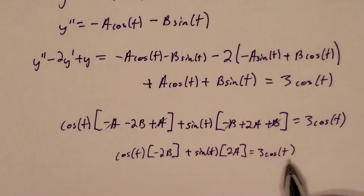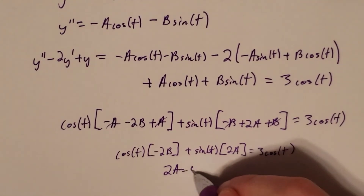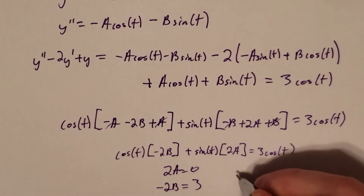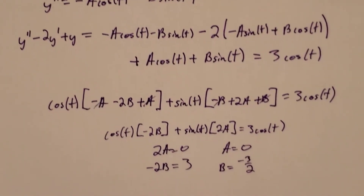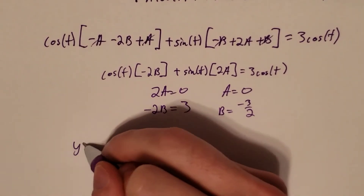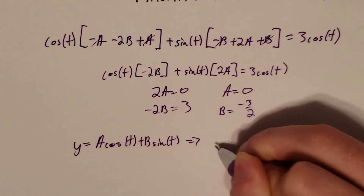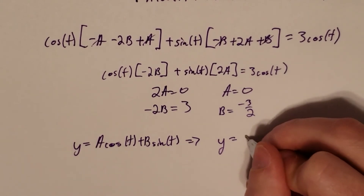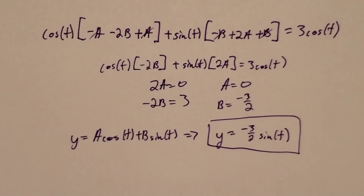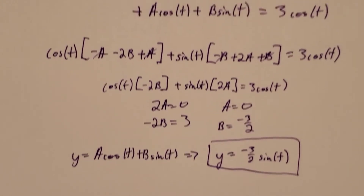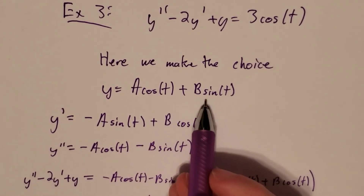The coefficient on the sine term on the right is 0, so 2a equals 0 and negative 2b equals 3. So we get a equals 0 and b equals negative 3/2. This means y equals a cosine of t plus b sine of t becomes y equal to negative 3/2 sine of t. And this is our particular solution. Notice that if we had only guessed y equals a cosine of t, we wouldn't have gotten the correct solution, because the answer was actually just a sine term.